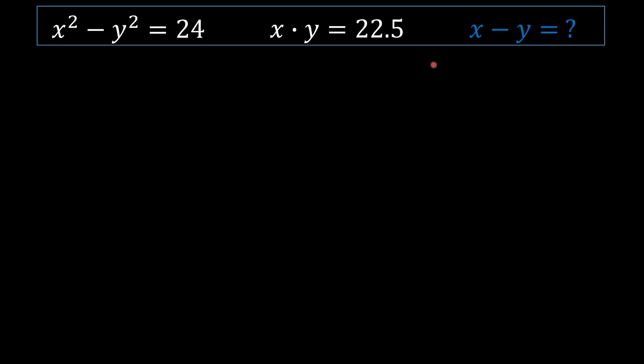So the way we're going to have to do this is we're going to have to do a lot of substitutions. So let's go right here then. Right, so this could be rewritten, this equation right here could be written as x is equal to 22.5 divided by y.